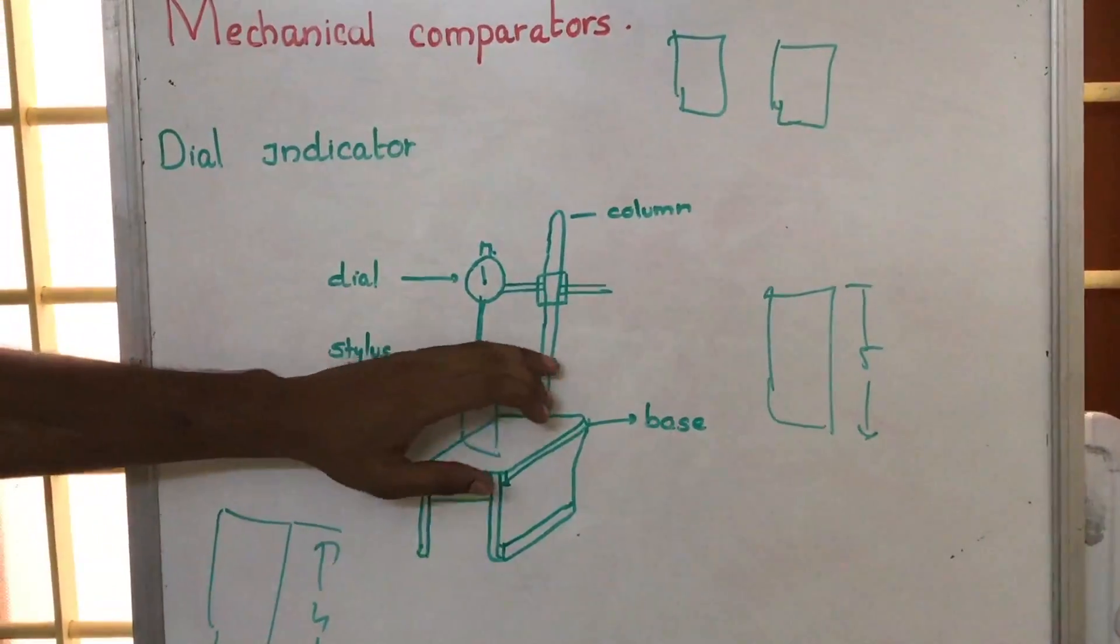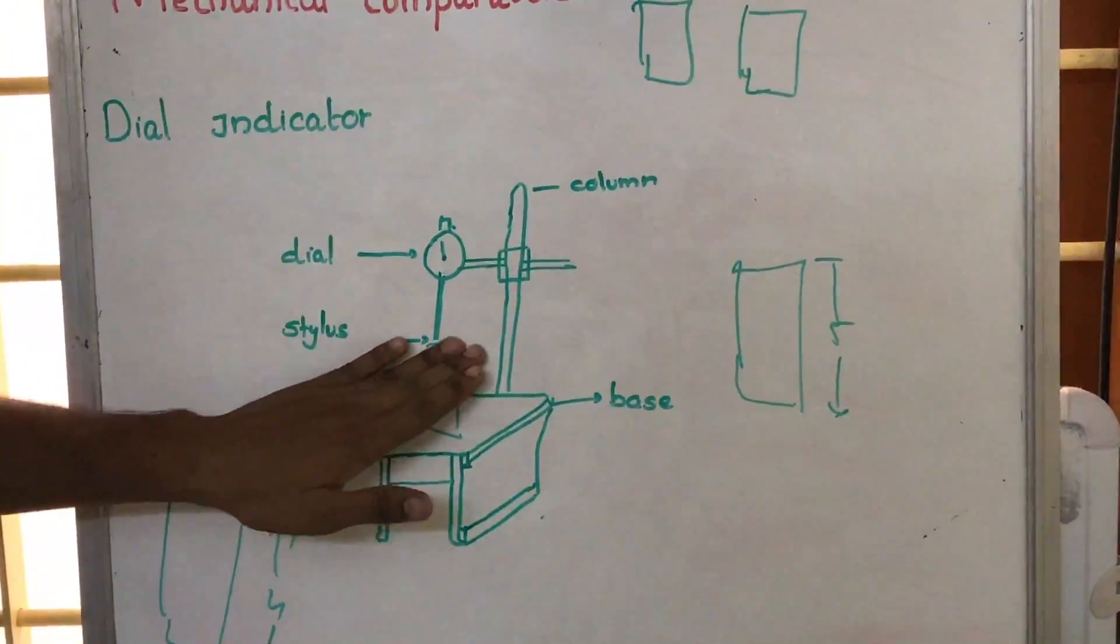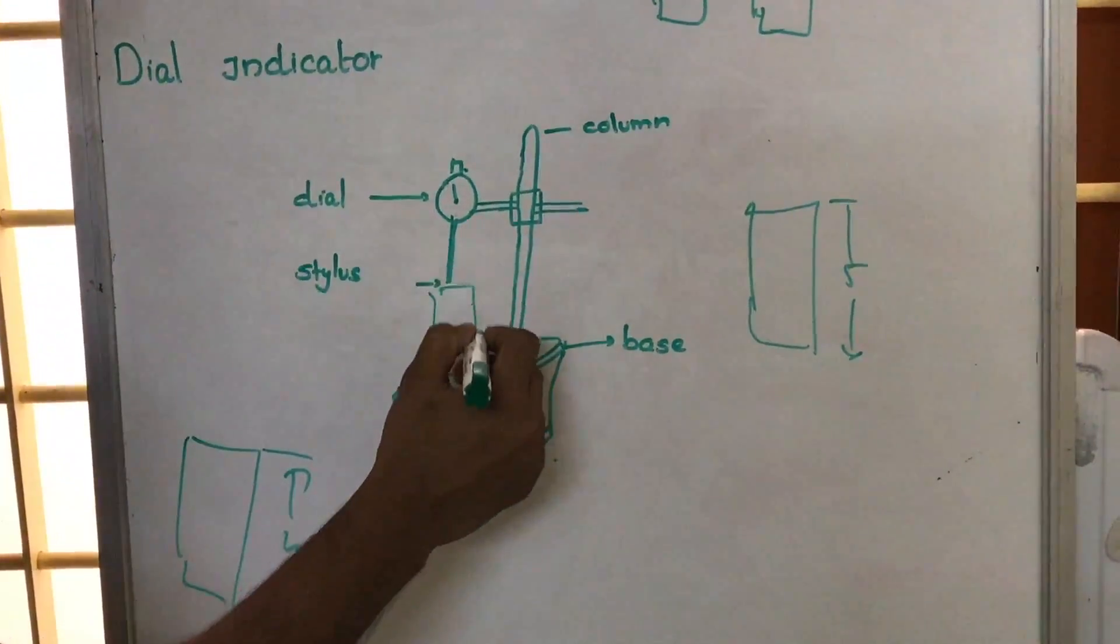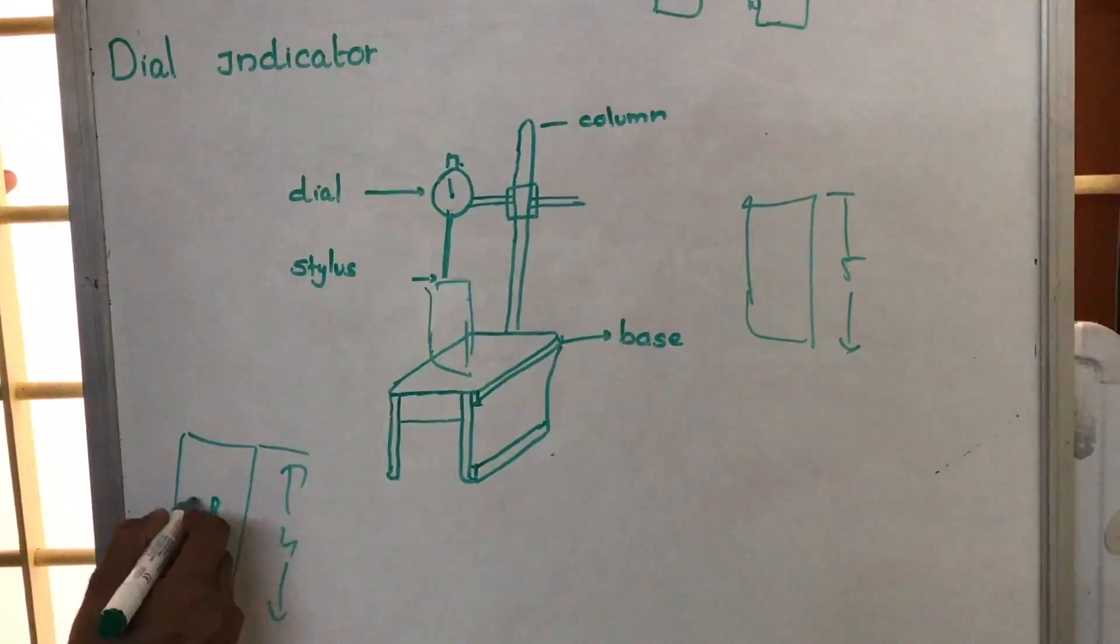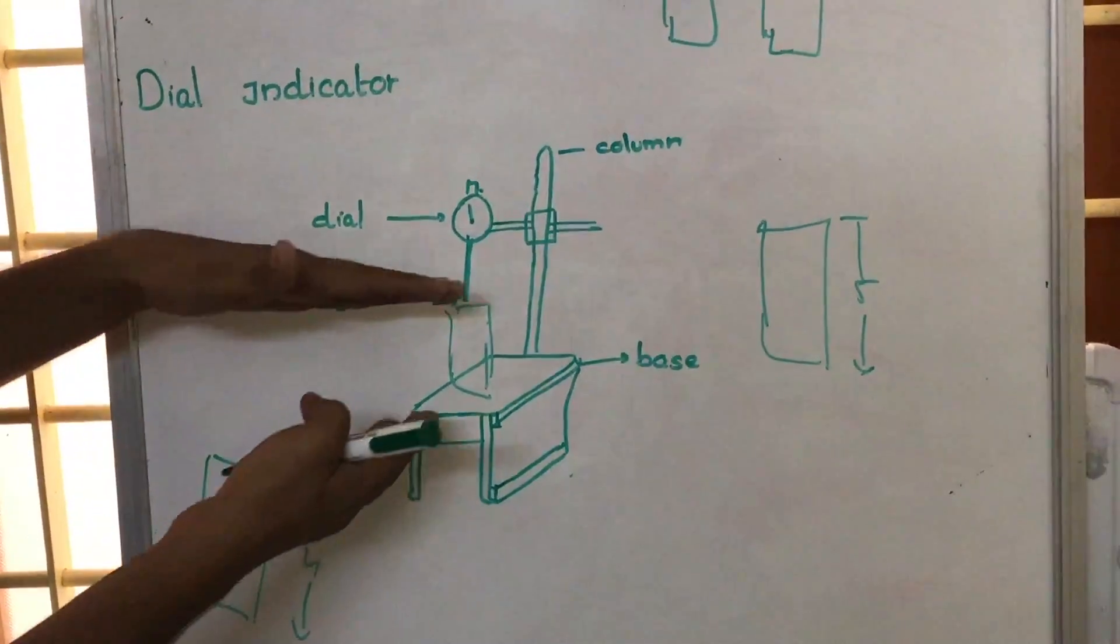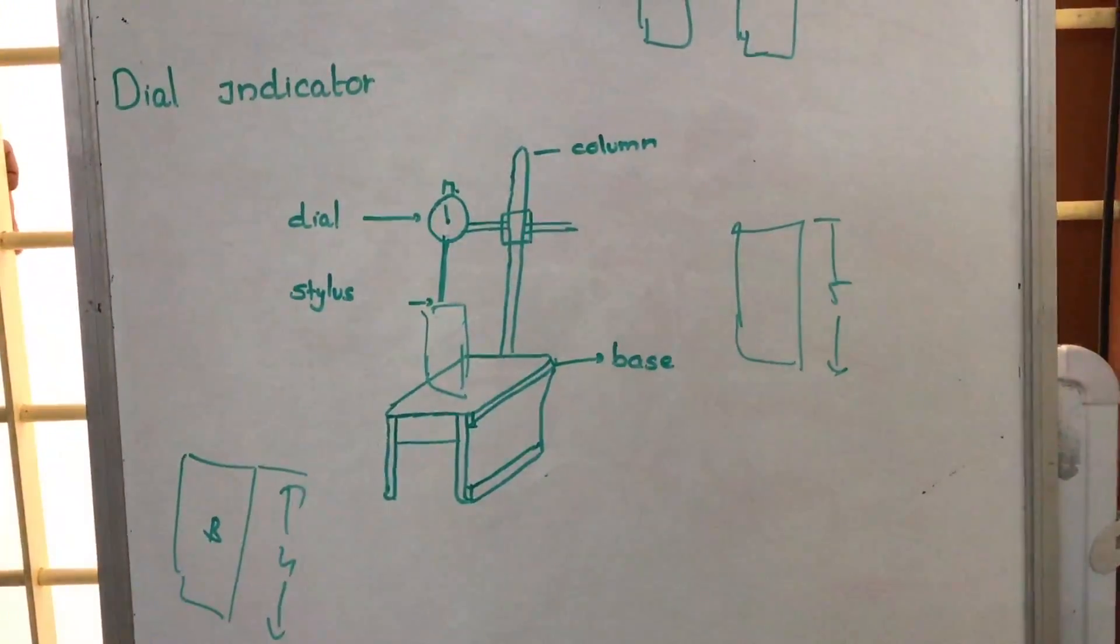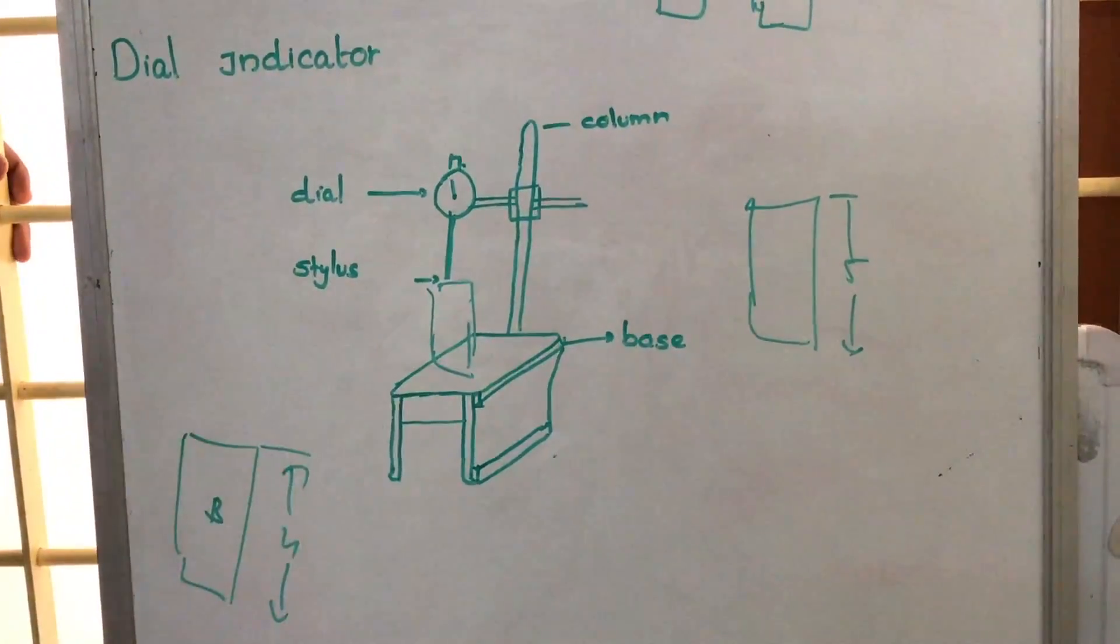So then we will remove this reference and we will be placing our required one. So on placing this, suppose say that this is body B. On placing this body B here, there will be some deflection in the indicator. That can be positive or negative.